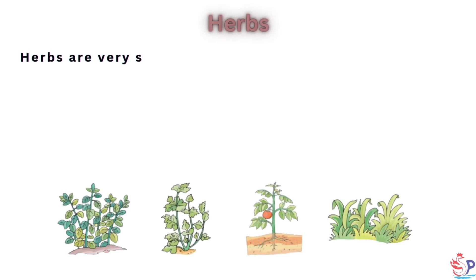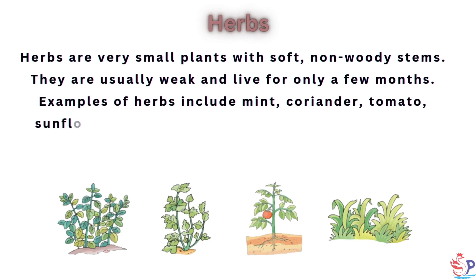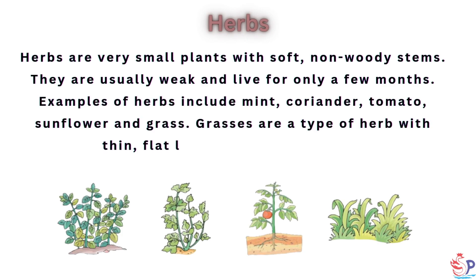Herbs are very small plants with soft, non-woody stems. They are usually weak and live for only a few months. Examples of herbs include mint, coriander, tomato, sunflower and grass. Grasses are a type of herb with thin, flat leaves and hollow stems.